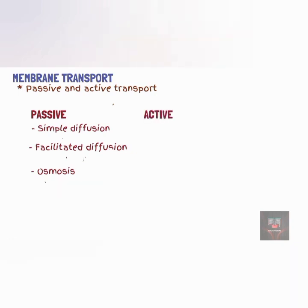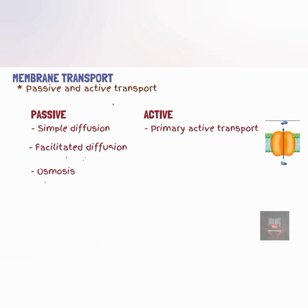Active transport is considered an active process because energy is required for carrier proteins to move solutes across the membrane against a concentration gradient. In primary active transport, a carrier protein transports a substance across a plasma membrane against its concentration gradient. These carrier proteins are referred to as pumps. An example is the sodium-potassium pump, which transports sodium ions outside of the cell and brings potassium ions inside the cell.